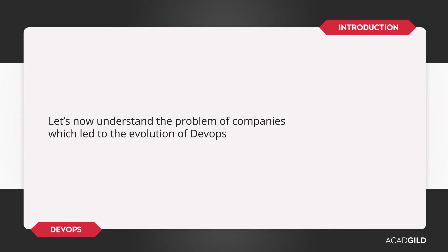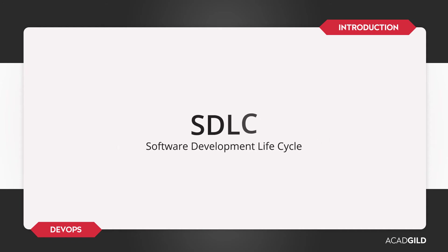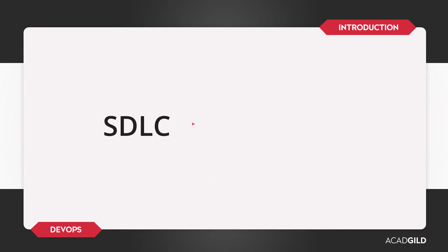Now, let us understand the current software development scenario. Around 10 years back, software development used to happen by implementing a software development lifecycle model called the SDLC Waterfall model. The SDLC Waterfall model was effective and was used for a decade, but it is not relevant in today's world as we have evolved from SDLC Waterfall to Agile development.